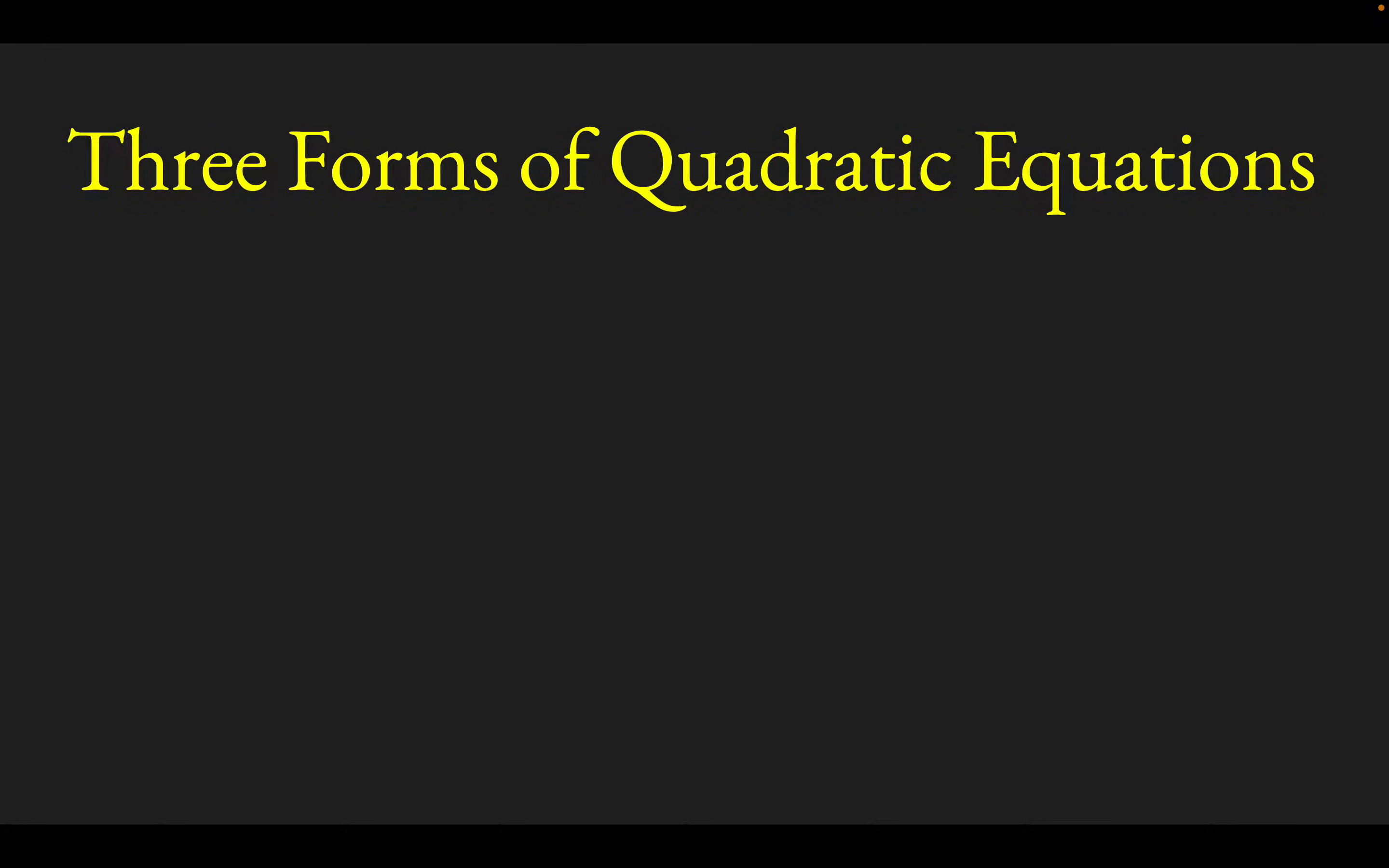All right, my friends, we're going to look at the three forms of quadratic equations and do a quick example. One form is called standard form, ax squared plus bx plus c. The value in this one is your c value will tell you straight away what the y-intercept is of that parabola.